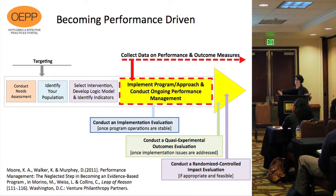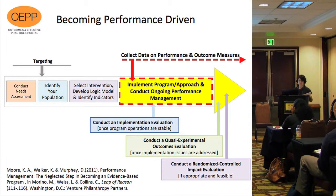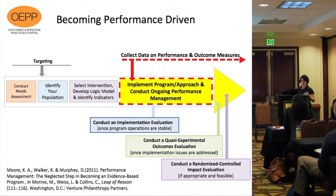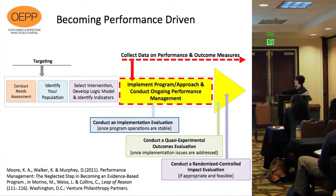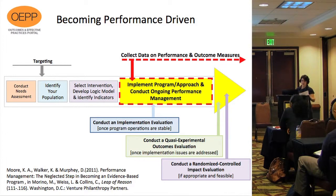This next slide shows what we think of as becoming performance-driven, which is a process. The first part is conducting a needs assessment — identifying risk and protective factors in your community for the population you're serving, and finding out what those factors are that relate to your outcomes of interest. That informs your program design. Also identifying your population to serve, making sure you're reaching that intended population. Having a clear logic model is the third step, and all of this needs to be done before you even start doing performance management.